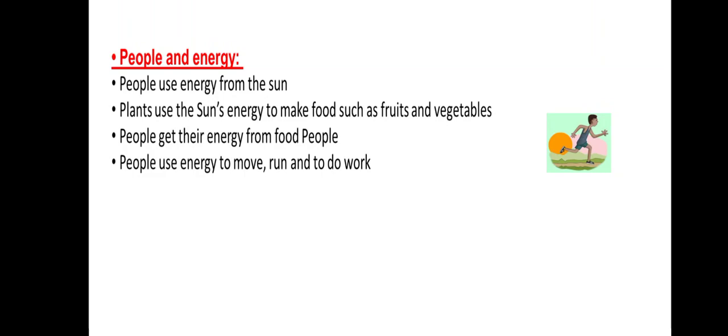People use energy from the sun. We can use the energy from the sun to grow food, like fruits and vegetables, because plants need energy from the sun. People get their energy from the food they eat. Food gives us energy so we can move, play, and do sports. People use energy to move, run, and do work.